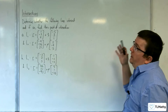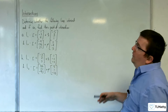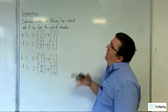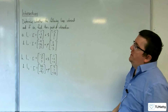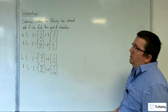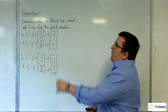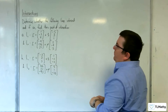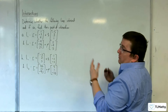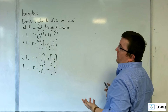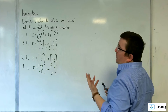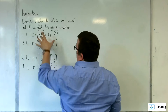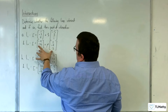In this video, we're going to determine whether the following lines intersect, and if so, find their point of intersection. So let's focus on A. To determine whether the following lines intersect first, we're going to put one equation equal to the other.